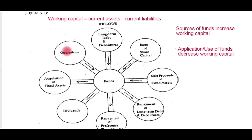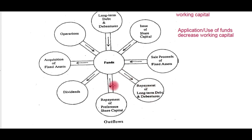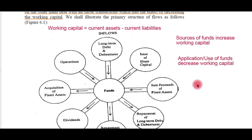For example, funds from operations — sales revenue generates funds for the business. Long-term debt and debentures bring money into the business. Issue of share capital raises new money. Sale proceeds of fixed assets bring money in. On the other hand, repayment of long-term debt and debentures means money is going out. Repayment of preference share capital, dividends, and acquisition of fixed assets also mean money is going out. Wherever funds come in, working capital increases; wherever funds go out, working capital decreases.